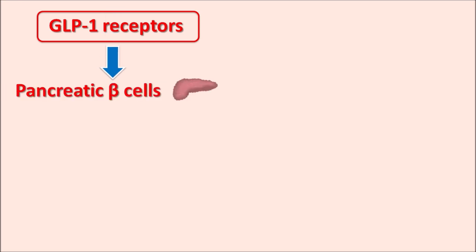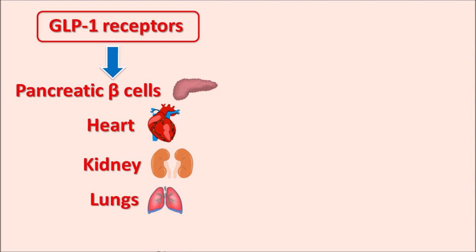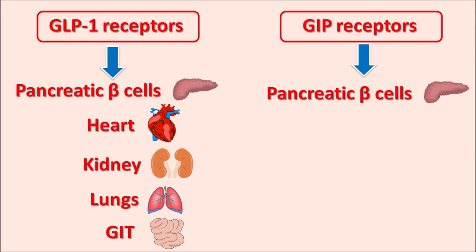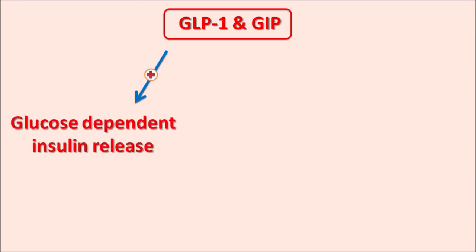Incretin hormones GLP-1 and GIP act through their corresponding receptors. GLP-1 receptors are widely distributed — mainly on pancreatic beta cells and alpha cells, but also on the heart, kidneys, lungs, and GI tract. GIP receptors are mainly abundant in pancreatic beta cells. The main action of these incretins is to stimulate glucose-dependent insulin release from pancreatic beta cells.